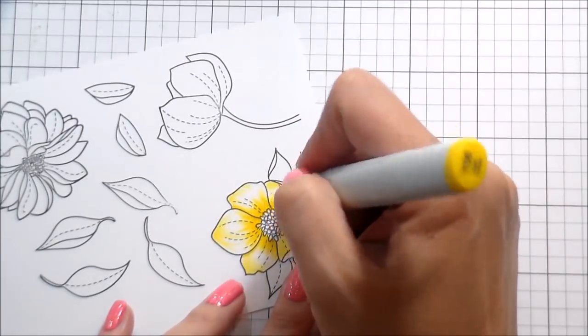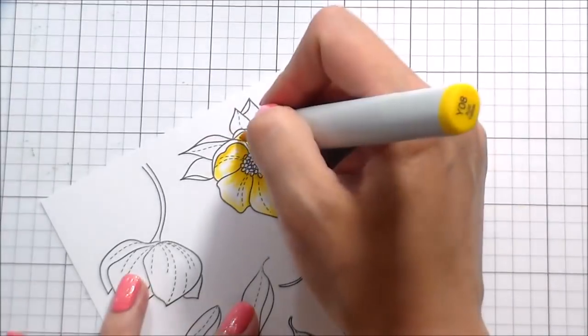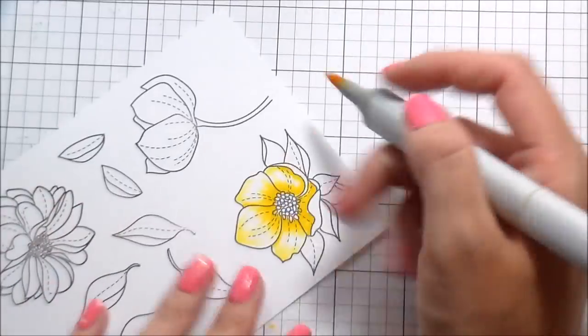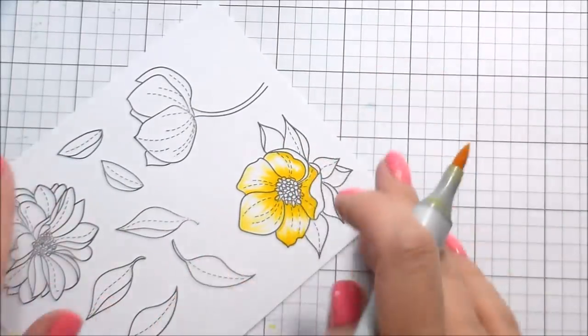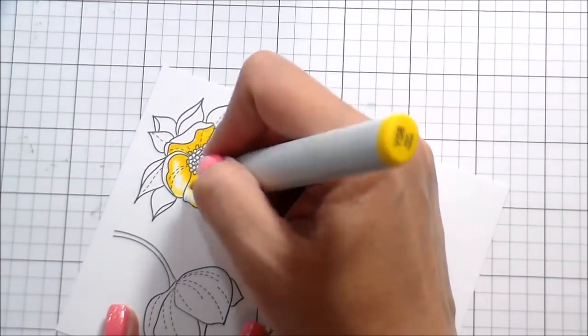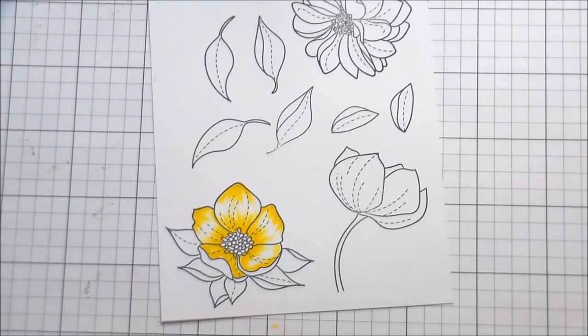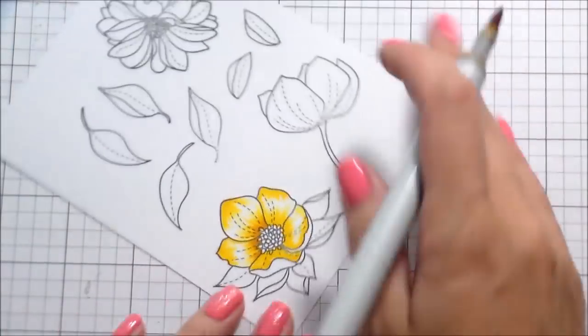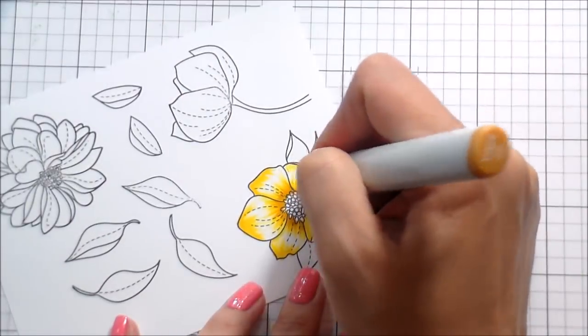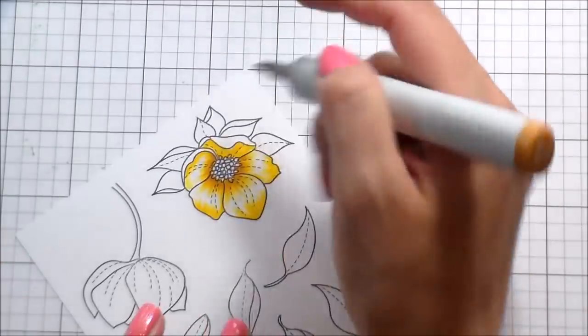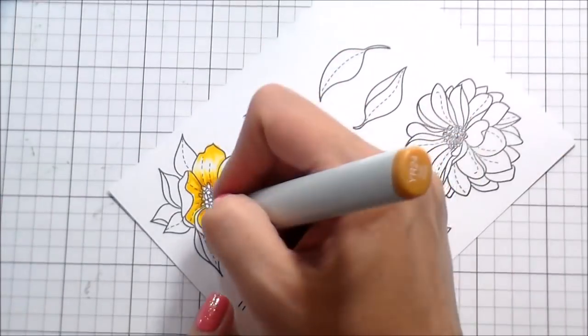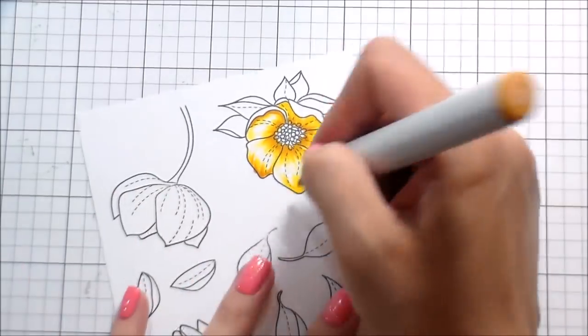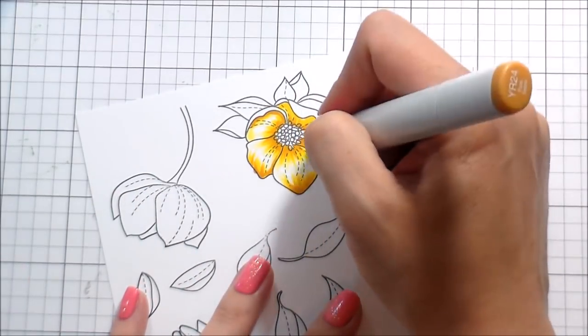Basically what I'm doing is I'm starting with my lightest color, using just the tip of the marker and using flicking motions to add in my color. To create a more round appearance for my flower, I'm adding shading to the base of the petals but also some shading to the tip of the petals so that my highlight will be in the center. The bottom two petals are curled up, so there's going to be shadows not only at the base but also where it's curling over.